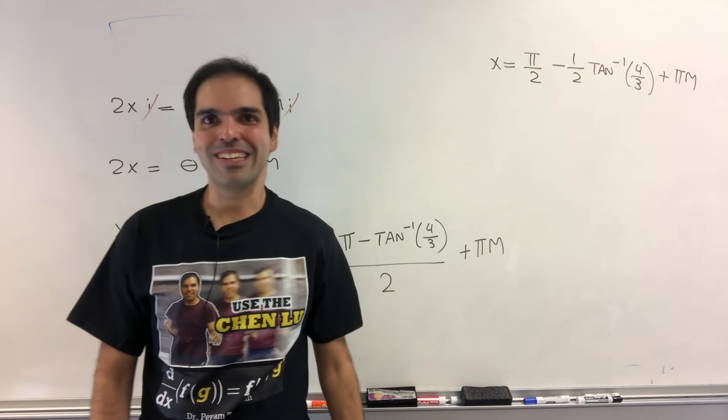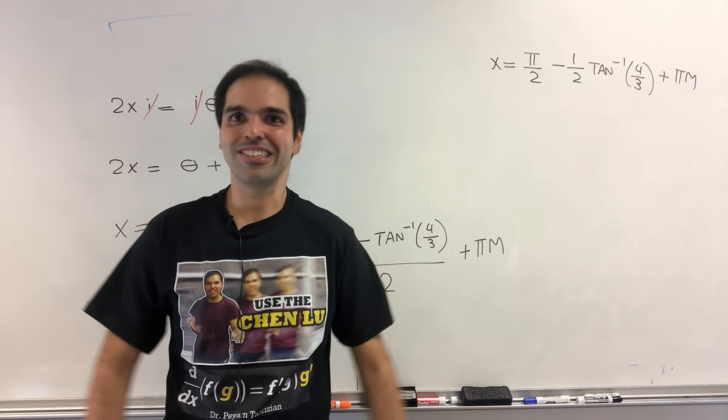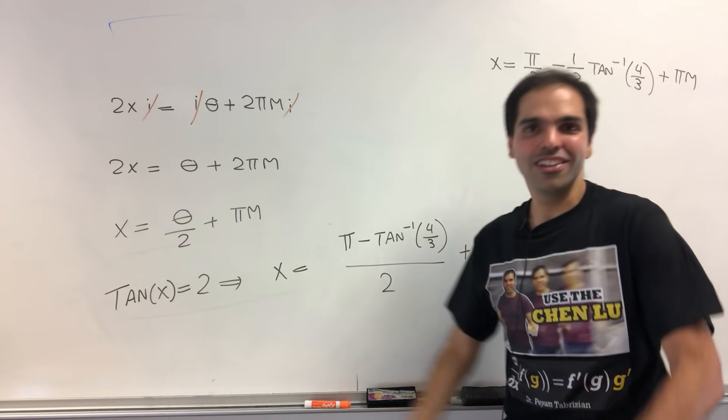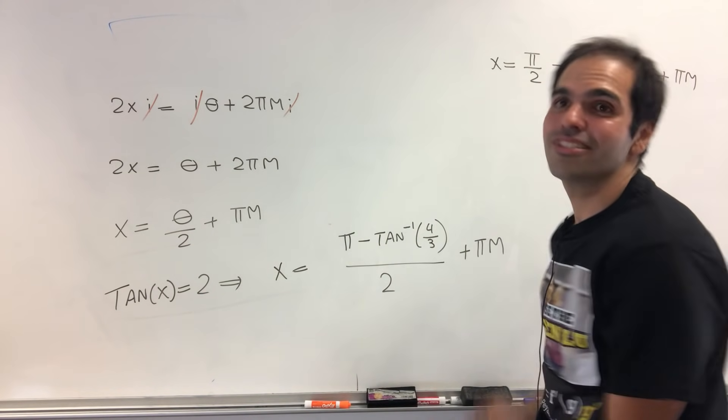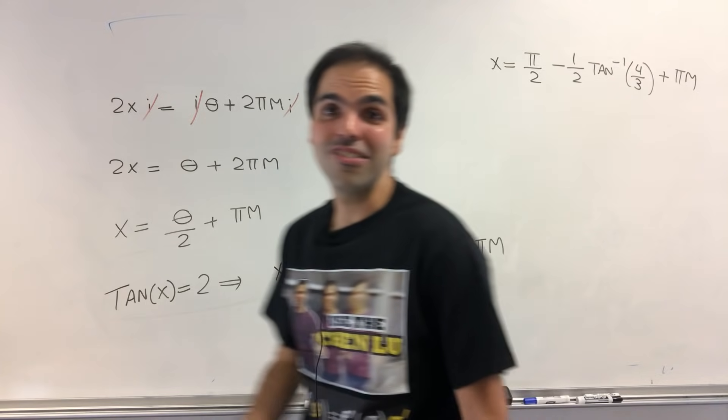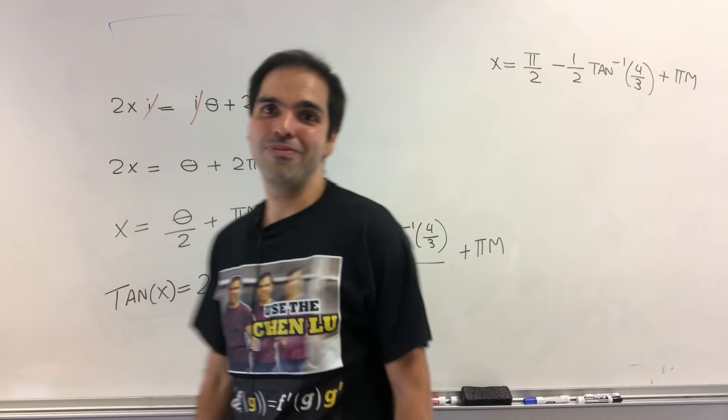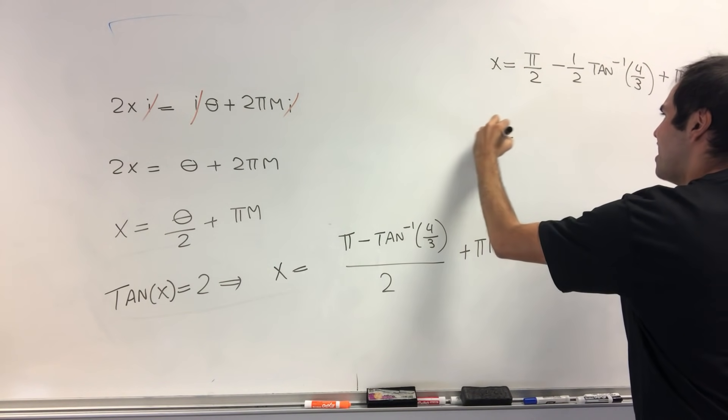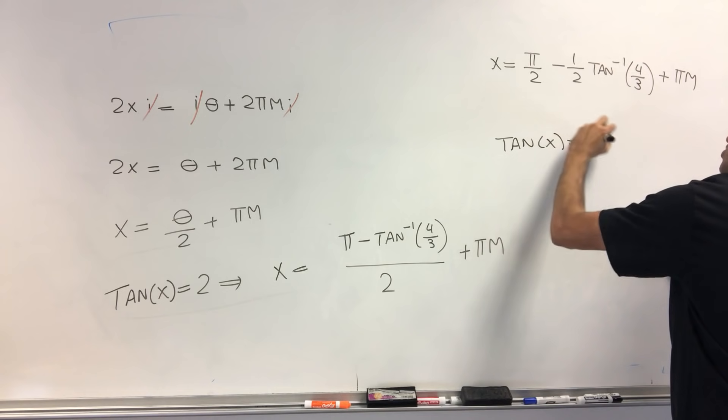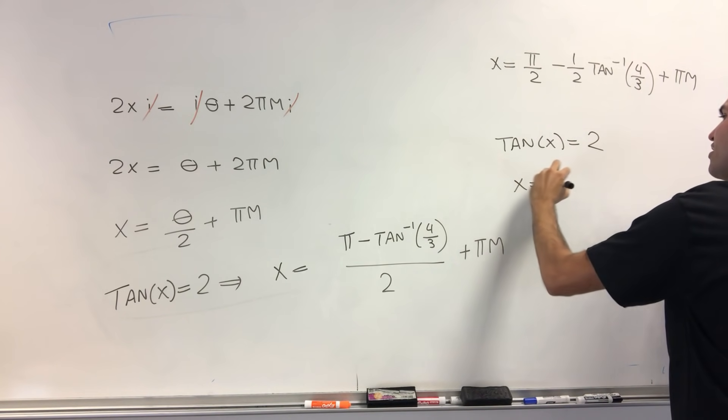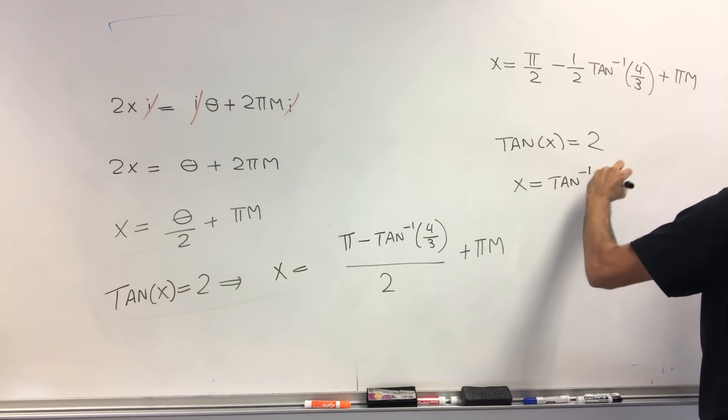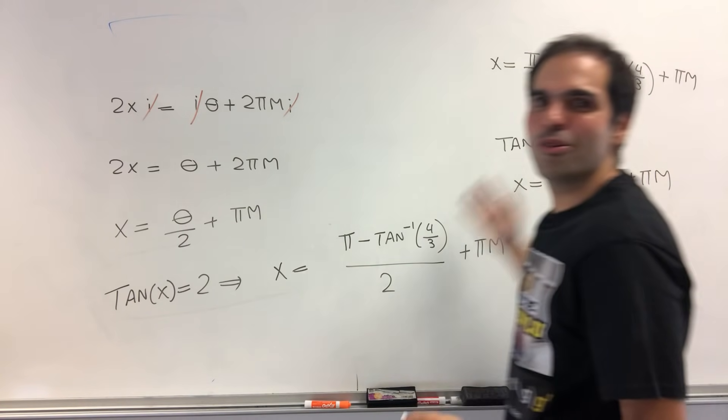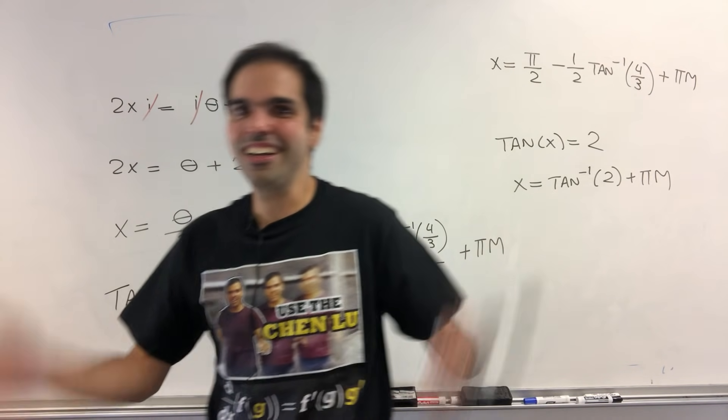And that's when I realized that black pen red pen was just messing with me because it turns out we started with this real equation and we got a real solution. So it turns out we didn't need complex numbers after all because you could have just said, for instance, that if tangent of x equals 2, then x is arctangent of 2 plus multiples of pi m. This is not more meaningful than the other expression. I know.